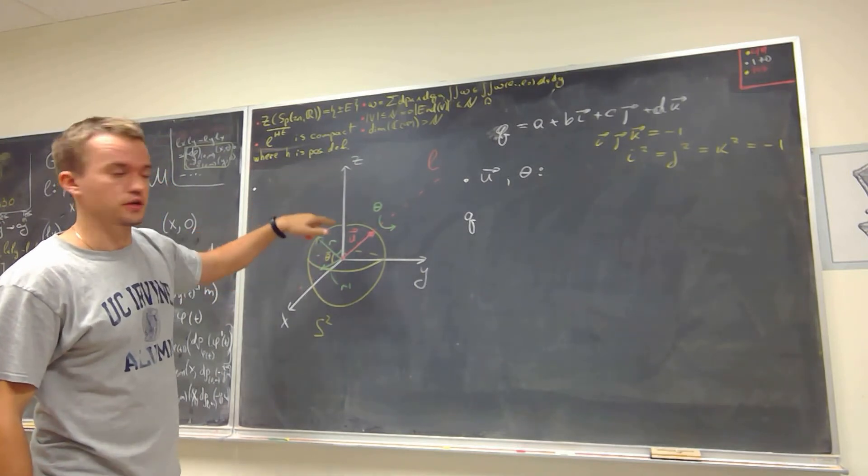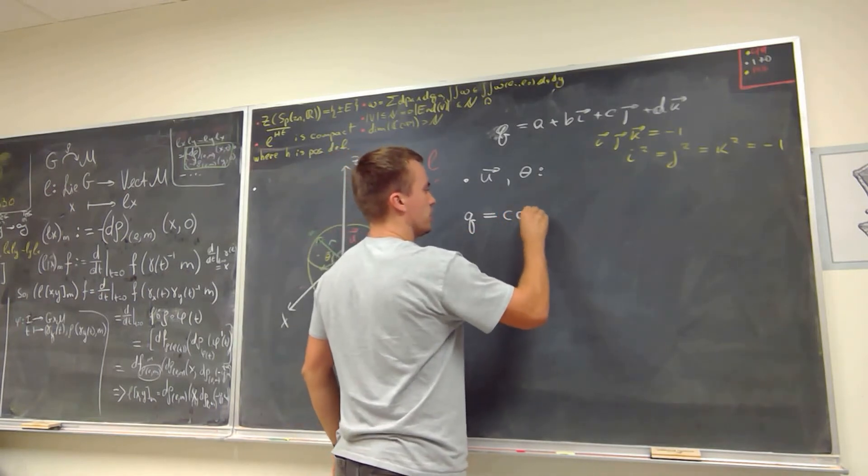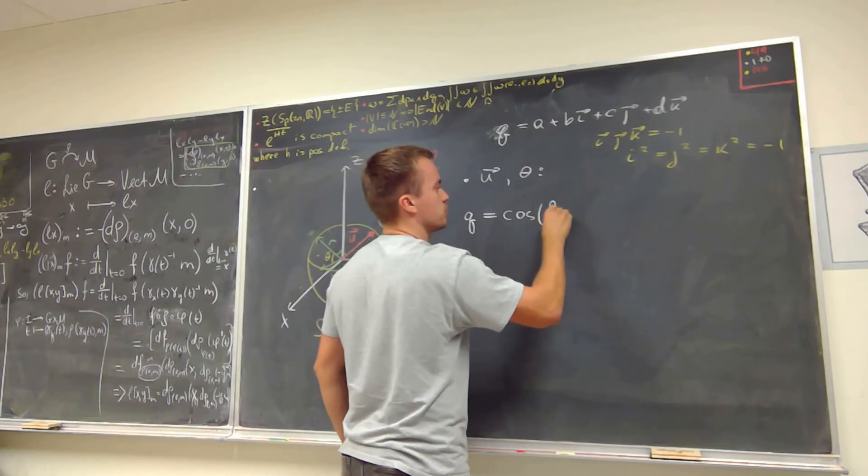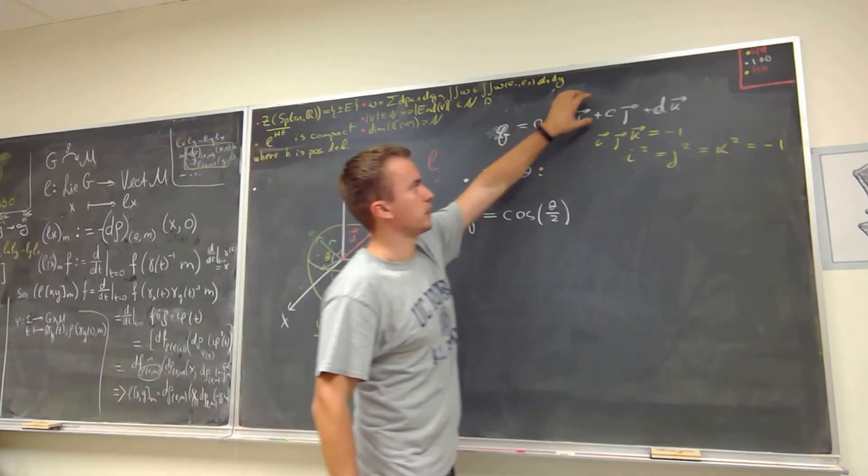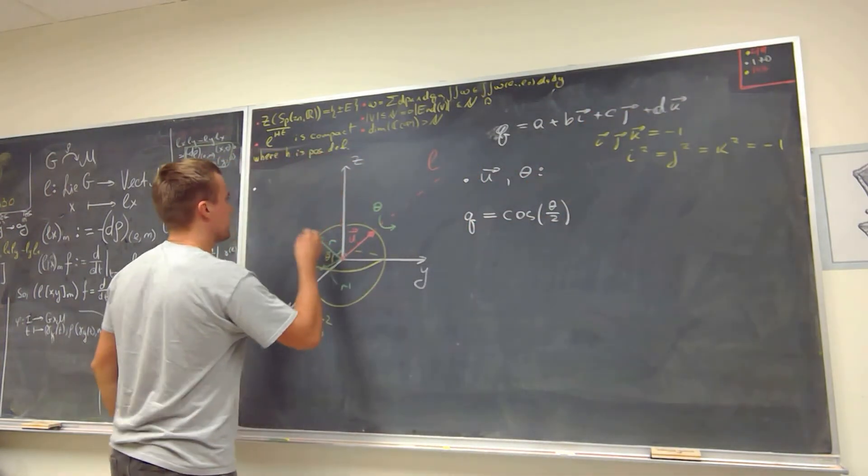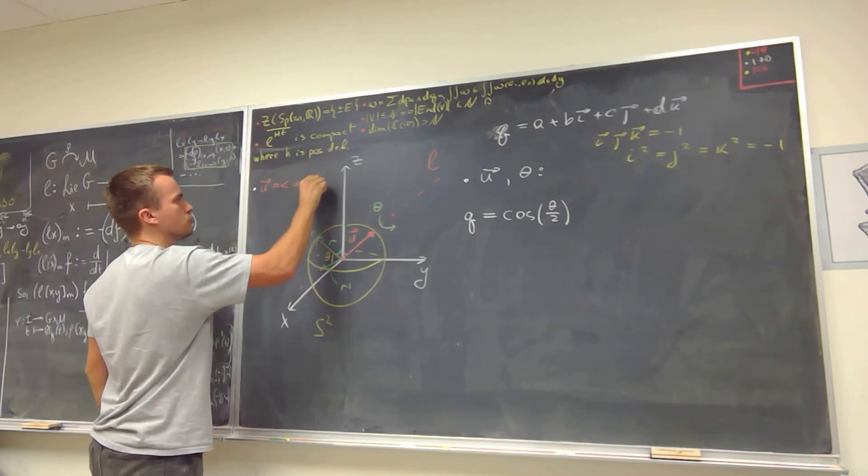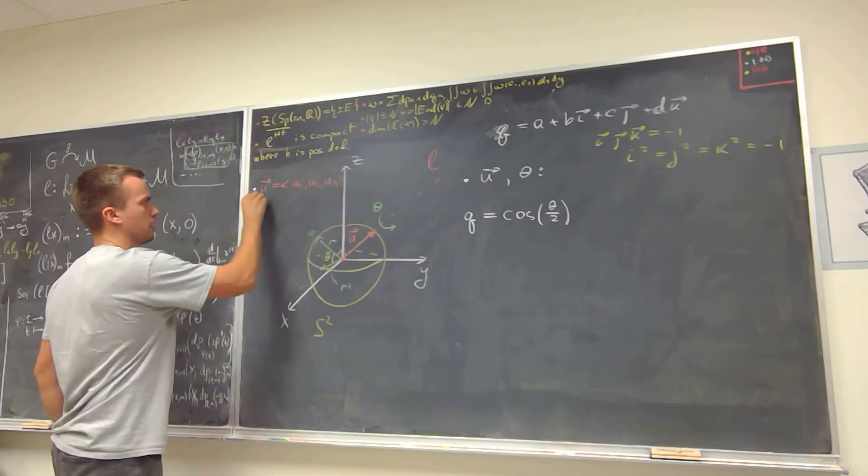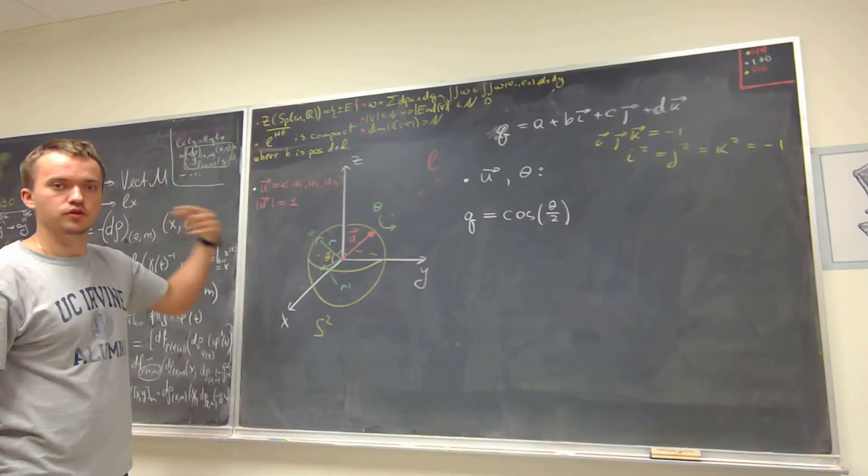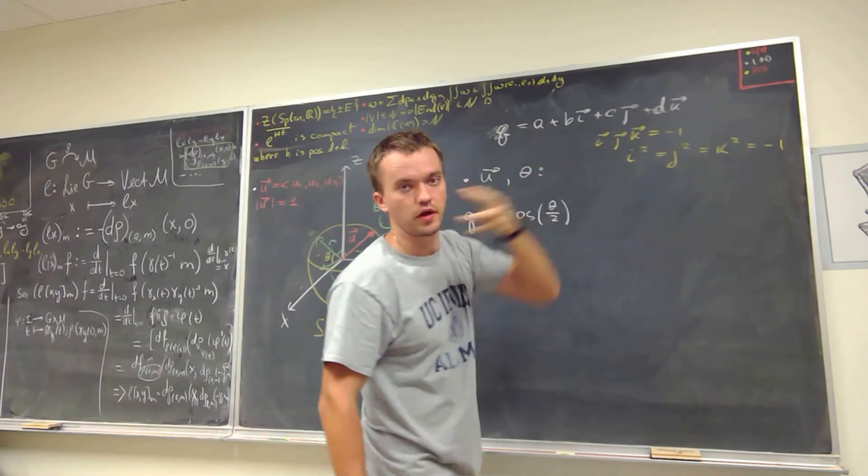Then, any rotation around line l by angle theta can be written as a quaternion where my a is going to be equal to cosine theta over two. And my imaginary part of the quaternion can be expressed in the following way. If I have a vector u, and let's say vector u has coordinates u1, u2, and u3, and again the magnitude of u is equal to one.